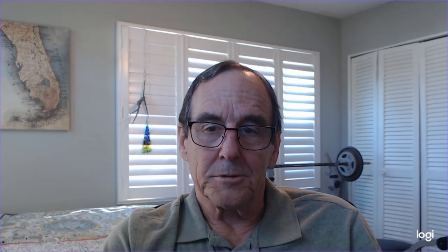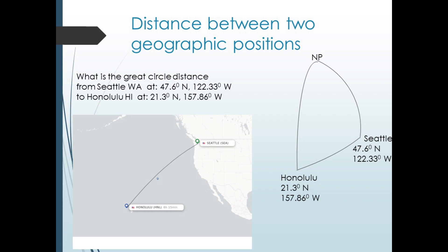Another common problem is finding the distance between two locations. We know the geographic position for both. That is their latitudes and longitudes. In this example, we have the geographic position for Seattle, Washington, and Honolulu, Hawaii. What would be the great circle distance between them? Once again, we make a spherical triangle with one point at Honolulu, one at Seattle, and one at the North Pole. The side joining Honolulu to NP is just the co-latitude 68.7 degrees. Likewise, the side joining Seattle to NP is its co-latitude 42.4 degrees. The angle at the pole will just be the difference in longitude for the two sides. That is 157.68 minus 122.33 equals 35.53 degrees.